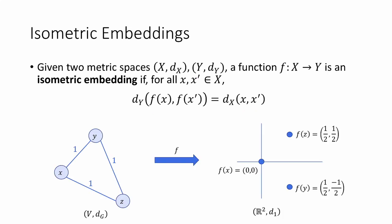So to see a quick example of this, suppose we have this graph metric space here. This is a very simple graph metric space where the distance between all of the points is 1. We can isometrically embed this metric space into the metric space ℝ² with the L₁ metric as follows. The point x can just map to the origin (0, 0), the point y is going to map to (1/2, -1/2), and the point z is going to map to (1/2, 1/2).